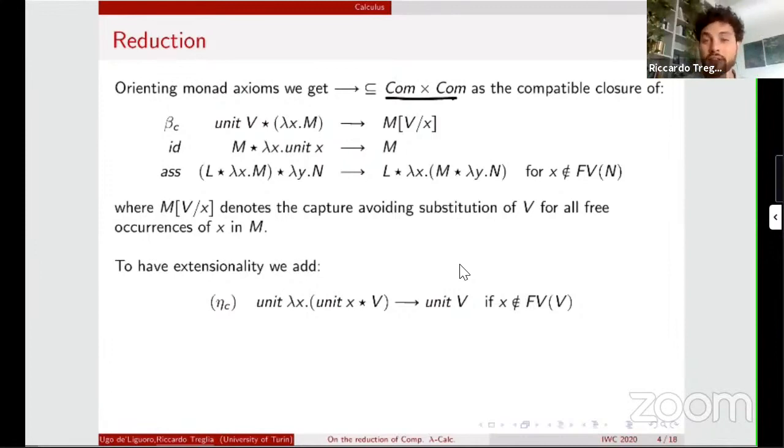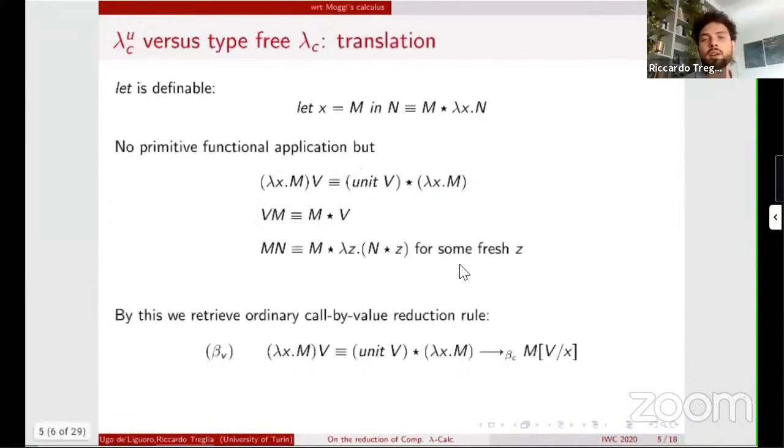I was talking about our reduction relation that is obtained by orienting the three axioms we saw before. And the substitution is defined as always. We can add also the extensionality rule. Now that we have our calculus syntax and the reduction relation, we can compare our calculus to Moggi's original one, where there is the let-construct structure. But in our case, the extra structure is just a syntactic sugar in terms of bind and unit. And also we can see the bind operator as a post-fix functional application,